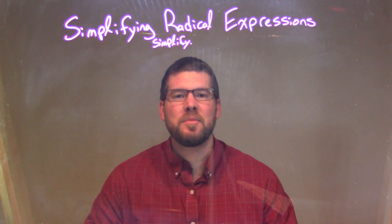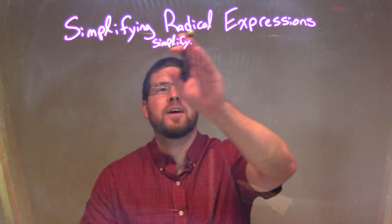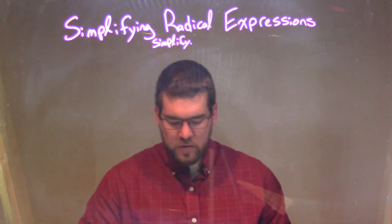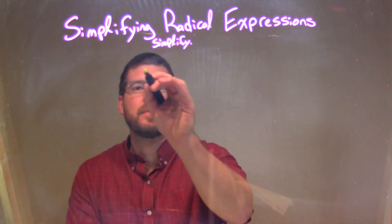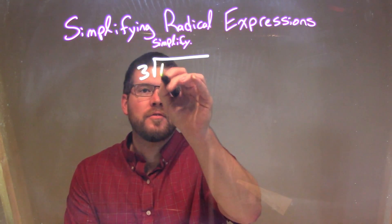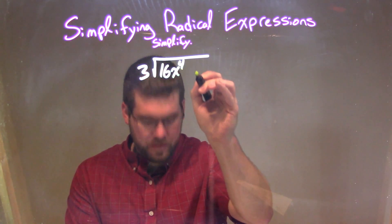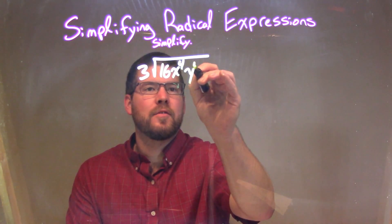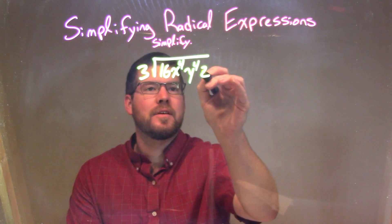Hi, I'm Sean Gannon, and this is MinuteMath, and today we're going to learn about simplifying radical expressions. So if I was given this expression: 3 times the square root of 16x to the 4th times y to the 4th times z.